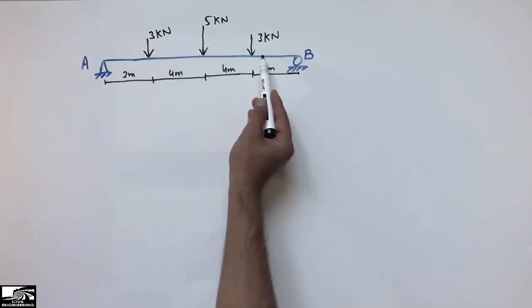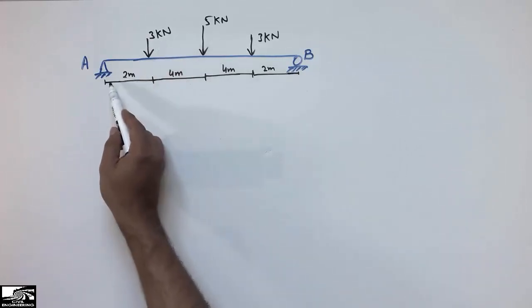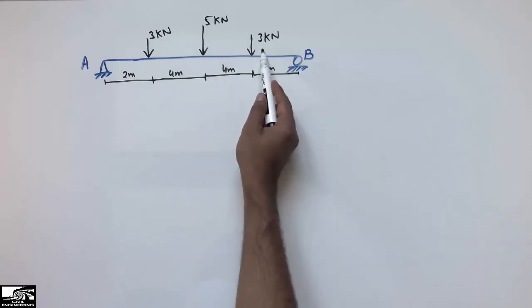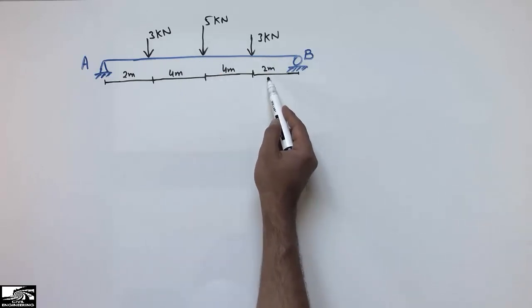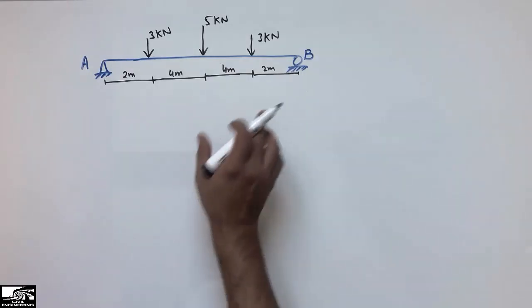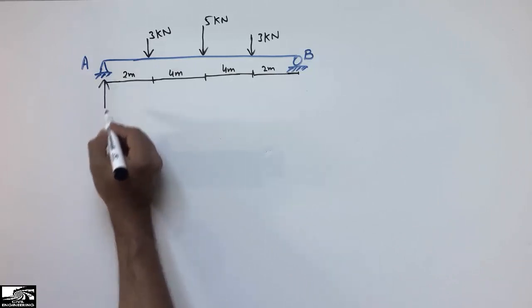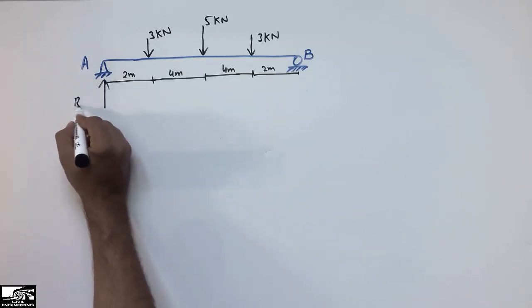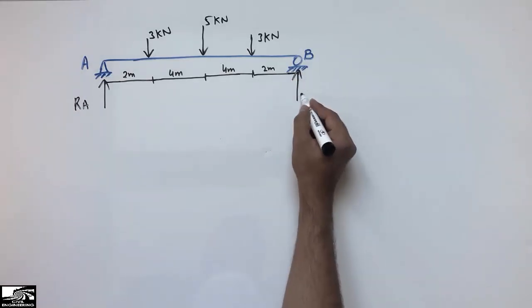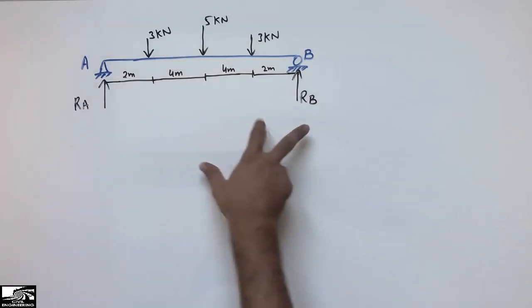The beam has different concentrated loads at different points: a 3 kN load located at 2 meters from the left end, a 5 kN load acting at the center of the beam, and 3 kN acting at a distance of 2 meters from the right end. This is a hinge support, which will resist the vertical load, shown as RA. Similarly, the roller support will resist the vertical load, represented by RB.